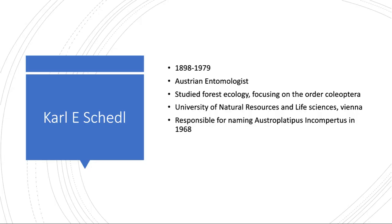Carl Skedd was an Austrian entomologist who studied forest ecology and the order Coleoptera. He studied with the University of Natural Resources and Life Sciences in Vienna.